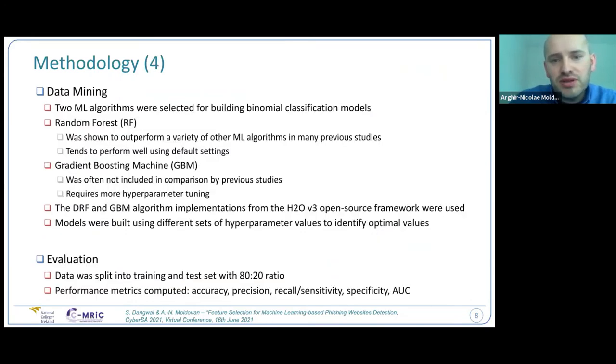For the data mining, we looked at what prior research have done. Some works have compared traditional machine learning with tree-based methods and ensemble methods. And based on the prior research, we selected two algorithms: Random Forest, which was shown to outperform a variety of modern machine learning algorithms in previous studies. It tends to perform well using default settings, so this is one of the strongest benefits of Random Forest. And then the other one was Gradient Boosting Machine. This was often not included in comparisons by previous studies, but I noticed the earlier paper used XGBoost.